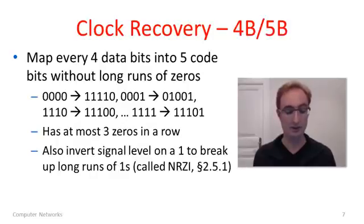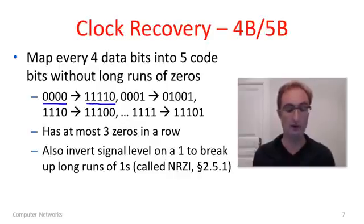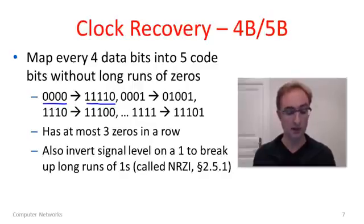The idea with 4B5B is that we map every four data bits into five code bits, which are then sent as a signal, and we do this in a way where we won't have long runs of zeros. For example, the input 0000 maps to the five code bits 11110. At the receiver, we map back from code bits to data bits. There are 16 entries in the table. If we follow this mapping, you'll find that there are at most three zeros you can get in a row, so we won't have long runs of zeros anymore.